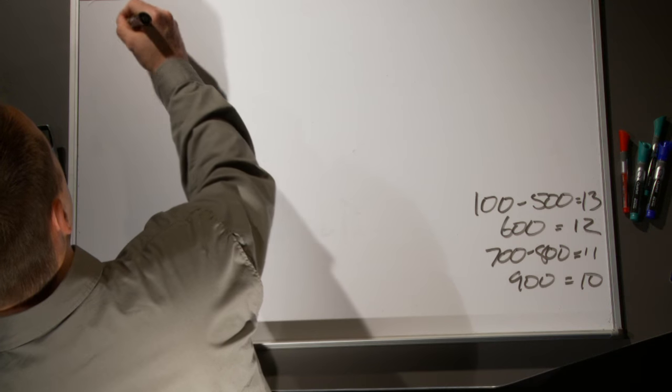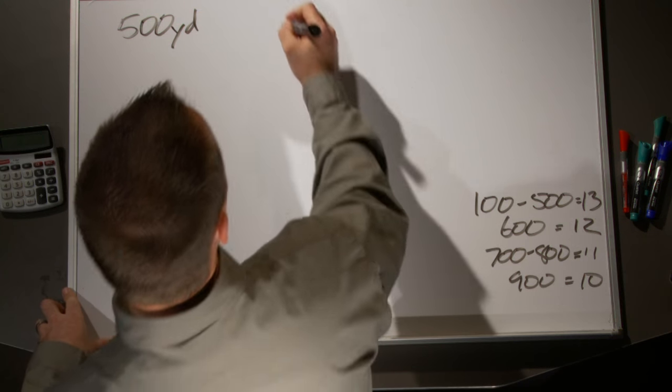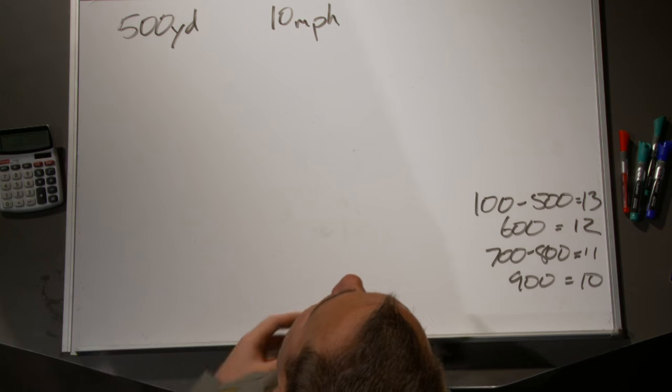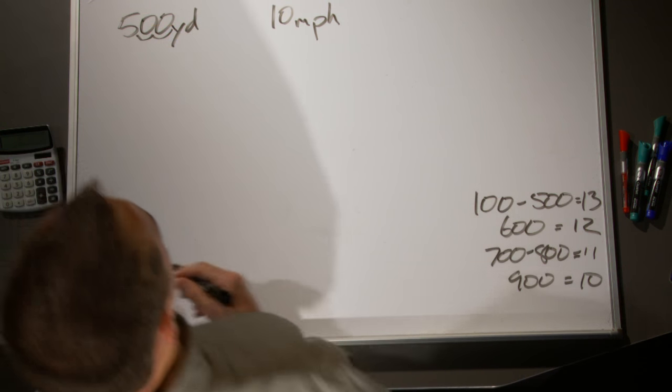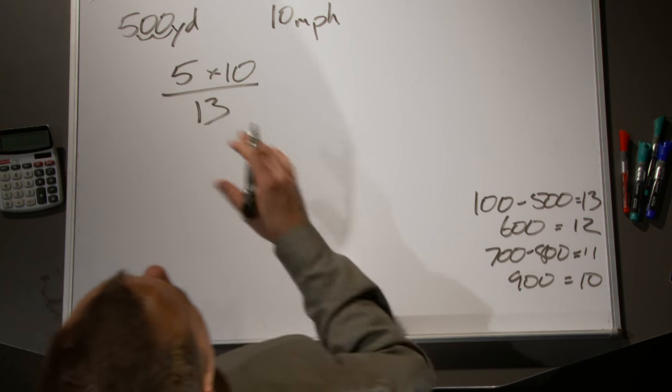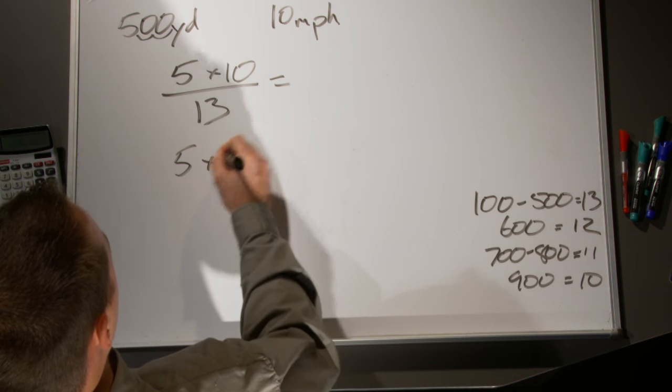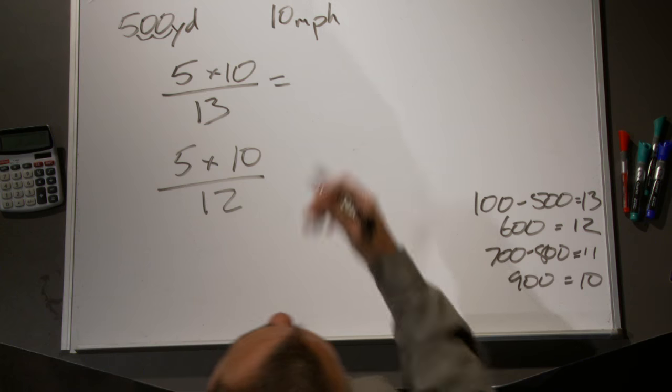Let's work this out for an example. Say we have a 500-yard target and a 10 mph wind. The distance in hundreds of yards is 5 — all I'm doing is moving the decimal place, so 550 yards would be 5.5. I take the distance of 5, multiply by my wind speed of 10, giving me 50, then divide by the correct constant of 13, and I end up with 3.84 minutes of angle. Now I'll also show what happens if I use my constant of 12 instead.